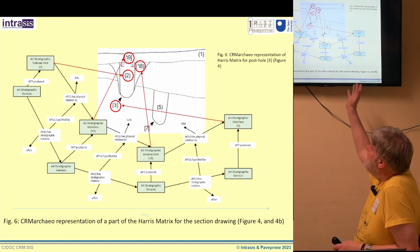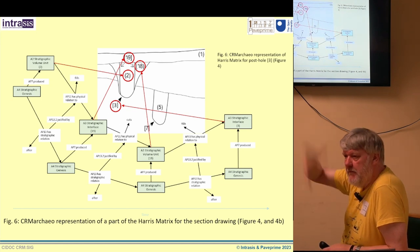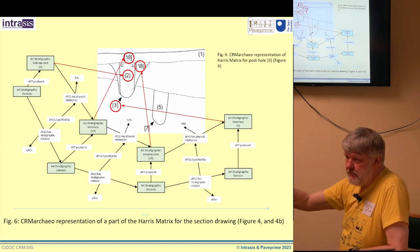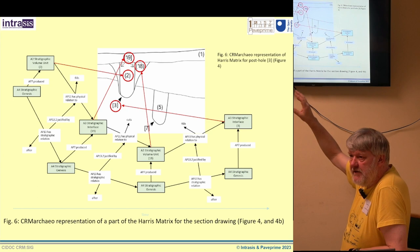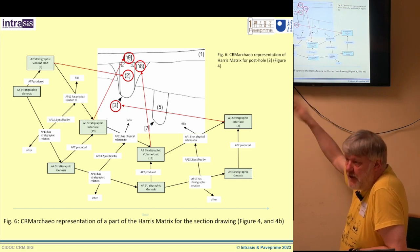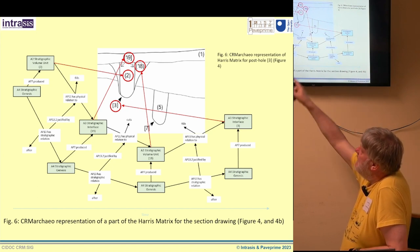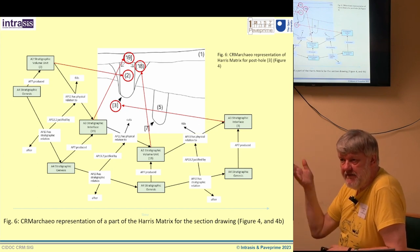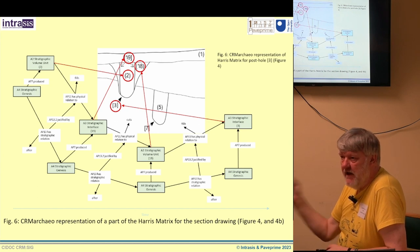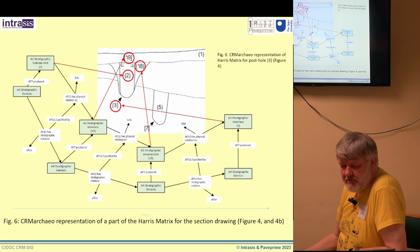You get something like a classic post hole with post fill: dig a hole, stick a pole in it, wrap it in earth, pole rots out, and we've got a post pipe. We now have a series of stratigraphic volume units — lumps of earth, the cuts, the post pipe itself — all physically related to each other. Then we take the sequence of things that we assume has happened and justify it by pointing back at the physical relationships that we actually observed. So this is CRM Archeo version two — out, ready to rock and roll, and I think it's very powerful.